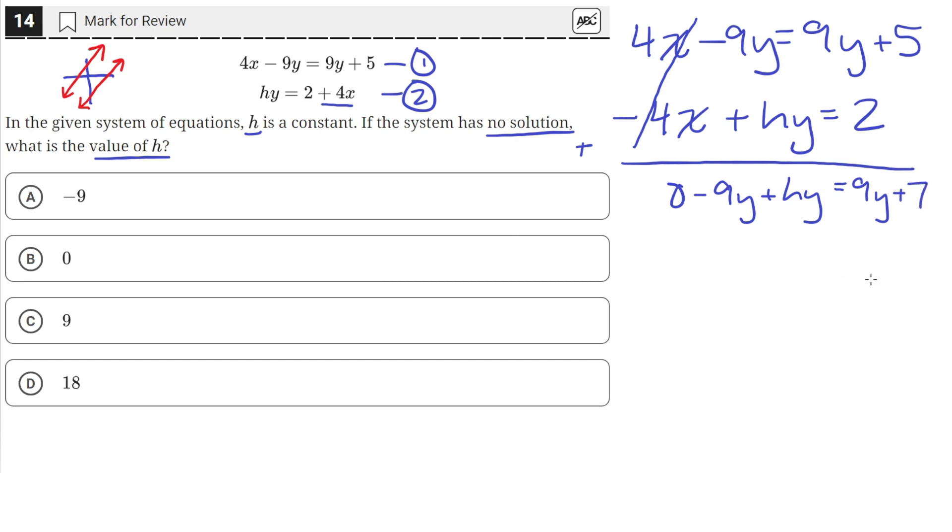So now we can move all the y's to one side. So if we move the y's to the left side, we'll get negative 18y plus hy equals 7.